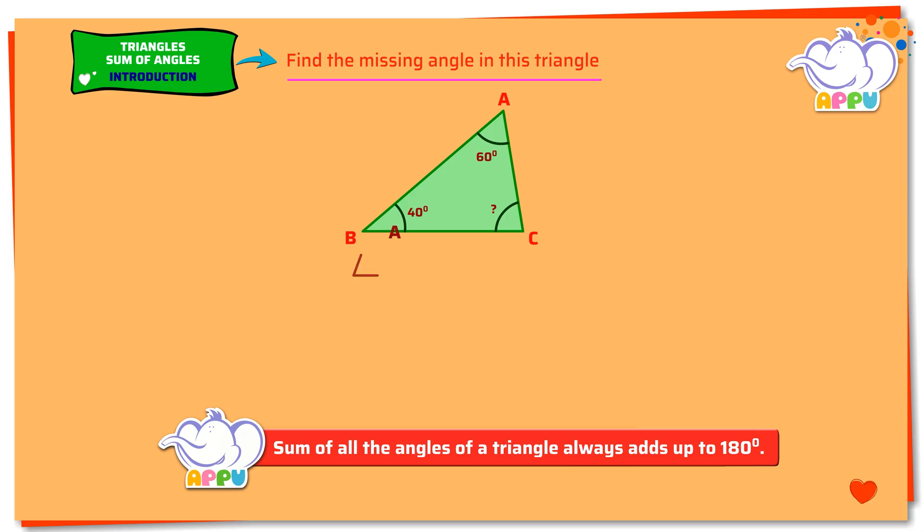Angle A plus angle B plus angle C equals 180 degrees. 60 degrees plus 40 degrees plus angle C equals 180 degrees. 100 degrees plus angle C equals 180 degrees.